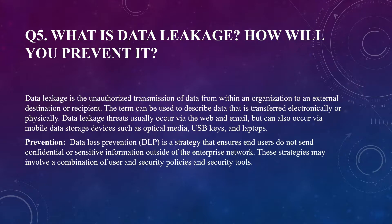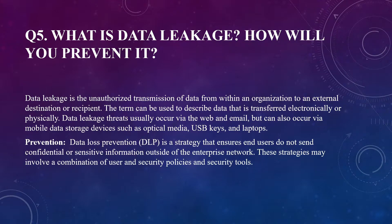Question number five: what is data leakage and how will you prevent it? Data leakage is the unauthorized transmission of data from within an organization to an external destination or recipient. It can describe data transferred electronically or physically. Threats usually occur via the web and email, but can also occur via mobile data storage devices such as optical media, USB keys, and laptops. Prevention involves data loss prevention (DLP), a strategy that ensures end users do not send confidential or sensitive information outside of the enterprise network.